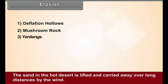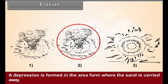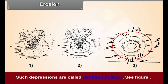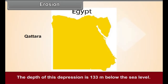Deflation Hollows: The sand in the hot deserts is lifted and carried away over long distances by the wind. A depression is formed in the area from where the sand is carried away. Such depressions are called deflation hollows. See figure 9.11. The Qattara depression in Egypt is formed in this way. The depth of this depression is 133 meters below the sea level.